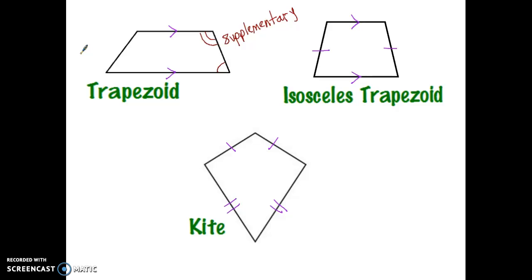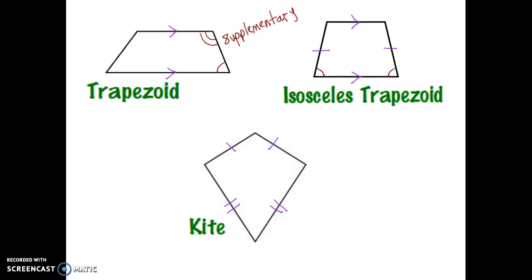In the isosceles trapezoid, based on its definition, I do have two sides that are congruent and two sides that are parallel. Something else that's true for every isosceles trapezoid: we consider these to be base angles. If you think of drawing an isosceles triangle and just cutting the top off, these would be base angles, and those angles would be congruent to each other. This set would also be congruent. So I do have some angles that are congruent to each other in the isosceles trapezoid. Very similar to the regular trapezoid, these two angles are supplementary, and the non-congruent angles must also add up to 180 degrees.